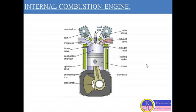The spark ignition engine is also called a petrol engine. This diagram represents the nomenclature of the internal combustion engine — in other words, it shows the different parts which are generally used during the working of the internal combustion engine. With the help of all these parts, the internal combustion engine works. I will discuss these parts one by one.